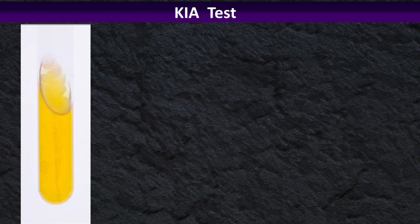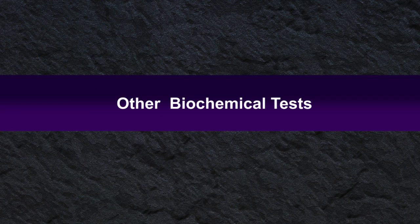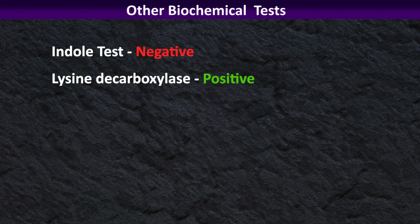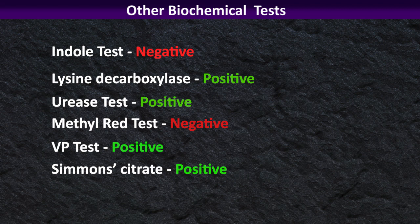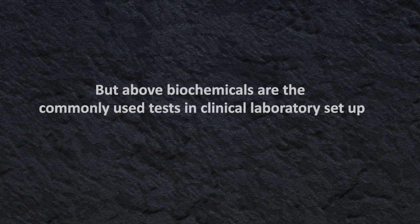We can also look at the KIA reactions which show alkaline/acid (AA), gas-negative, and hydrogen sulfide-negative. Other biochemical tests include: Indole test negative, Lysine decarboxylase test positive, Urease test positive, Methyl red test usually negative, Voges-Proskauer (VP) test positive, and Simmons citrate agar test positive.